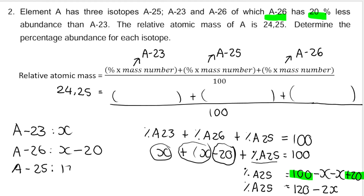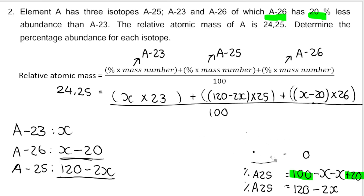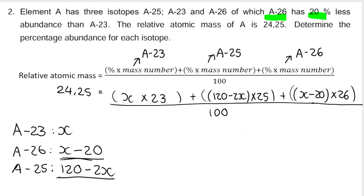So: A23 = x times 23, A25 = (120 − 2x) times 25, A26 = (x − 20) times 26. This rough work can be erased and then I do normal solving math. These percentages go in brackets, and we distribute each multiplier into its bracket to simplify.